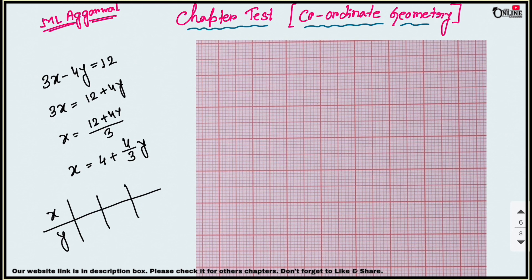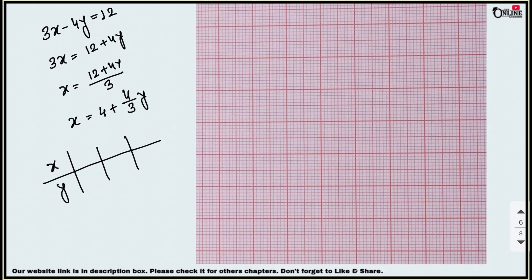The value of x depends on the value of y. Remember: choose values of y such that x is always a whole number, not a fraction. Let y equal to 0. Then x equals 4 plus (4/3) times 0, which gives x equal to 4.